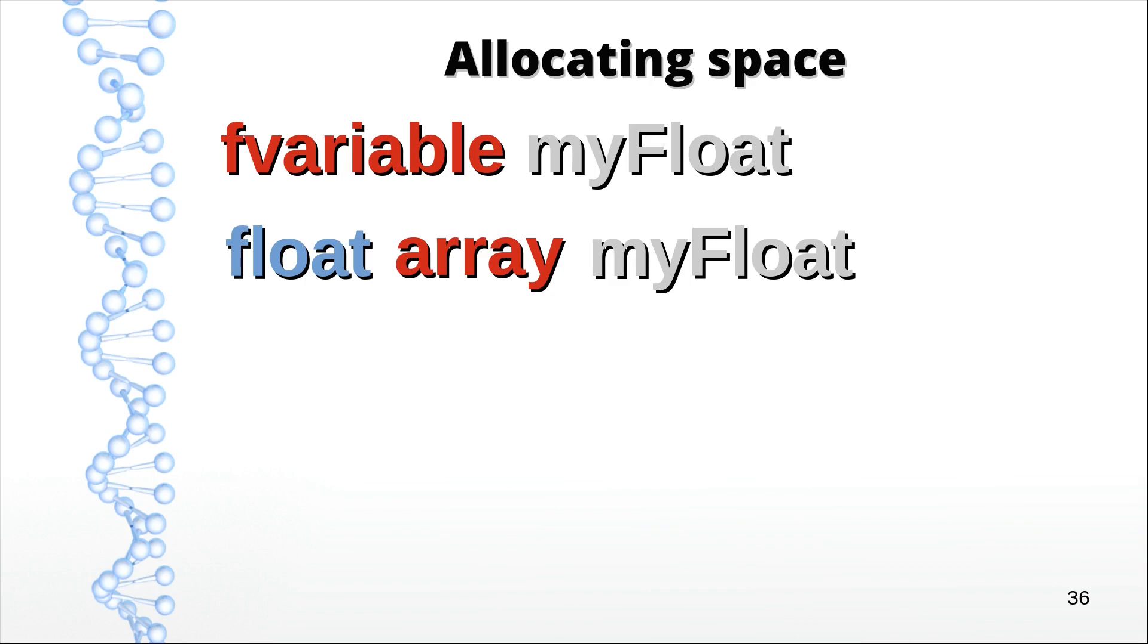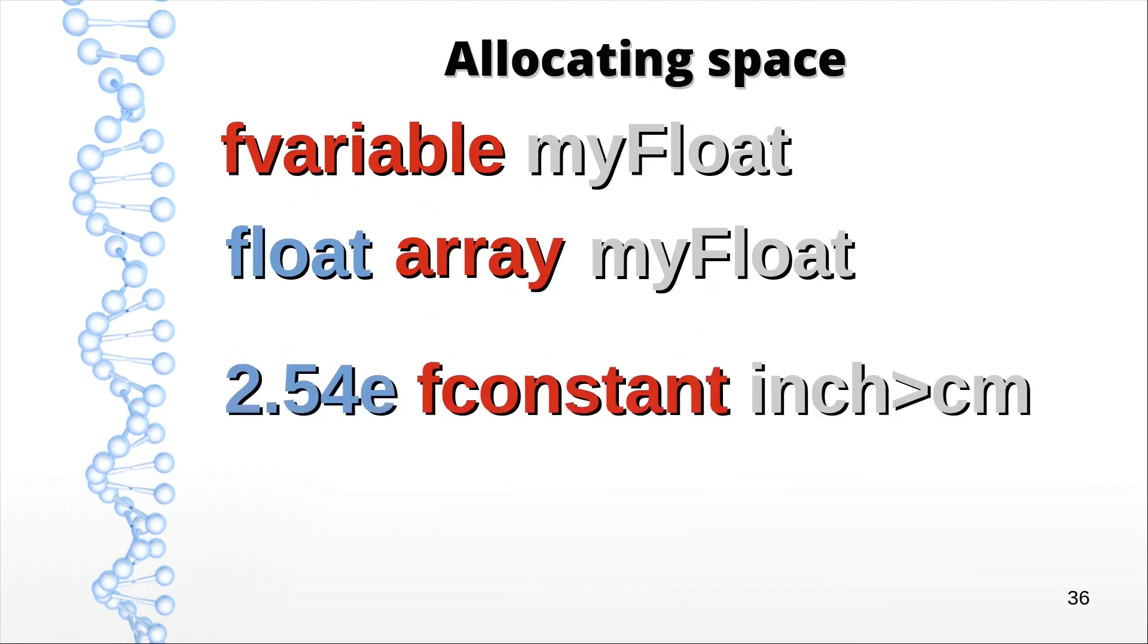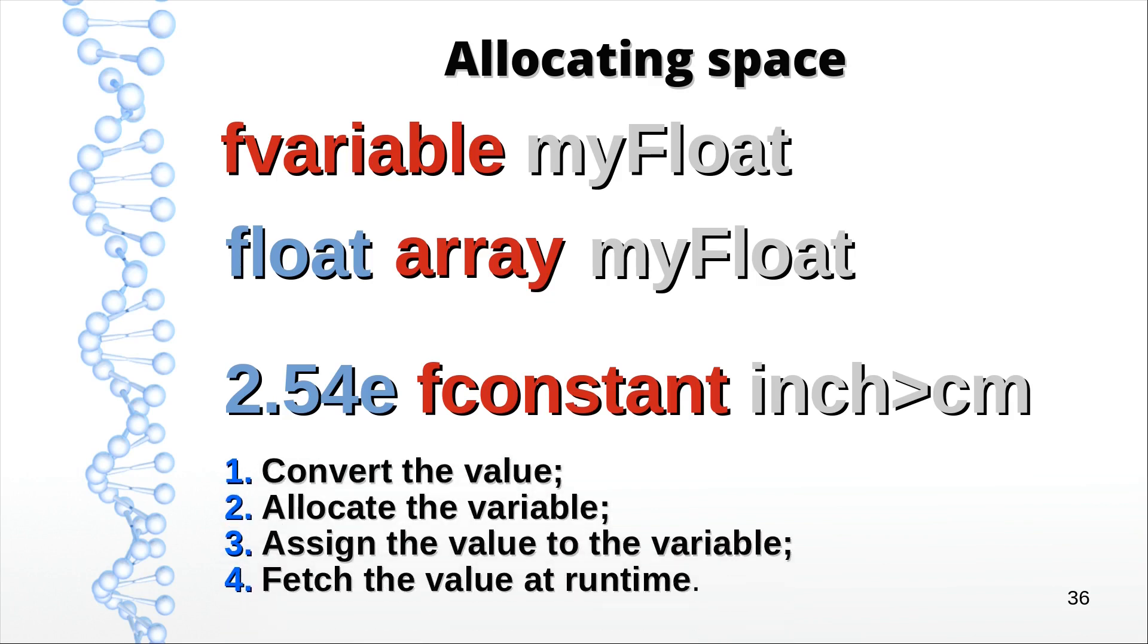But that is nothing in comparison with fconstant. A variable was only about allocation. But in order to support this monster, we have to convert the value, because 4tH is not going to recognize it. Allocate the variable, put the value into that variable, and finally automatically retrieve that value at runtime. That's one tall order.